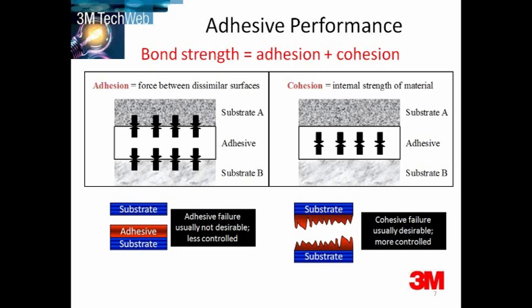If you do achieve cohesive failure, it's actually defined by the strength of the adhesive. Substrates can also fail as well in certain scenarios — this is a much more controlled scenario. So it's fundamental to get good adhesion, because that's the platform from which you can actually design using conventional methodology.